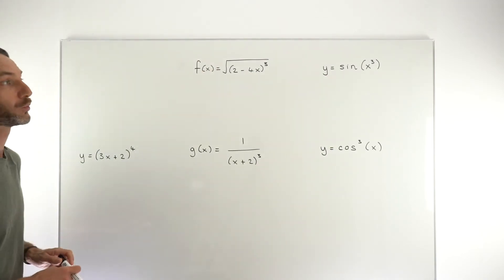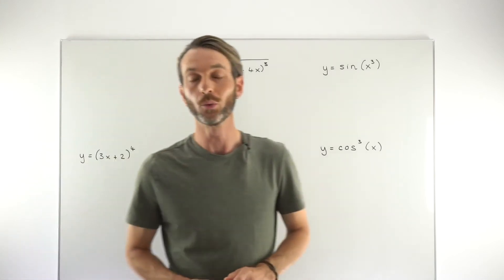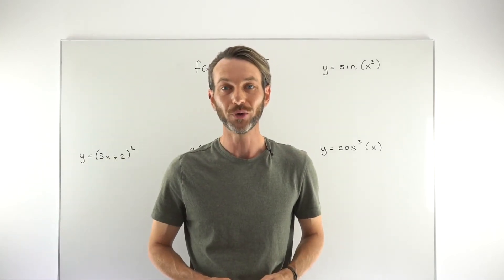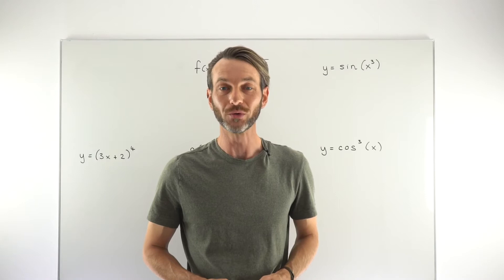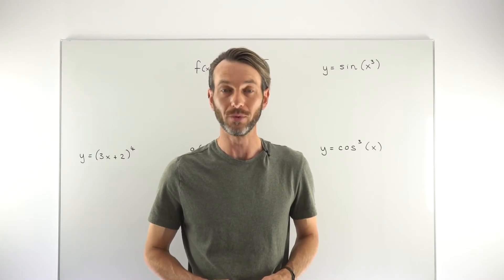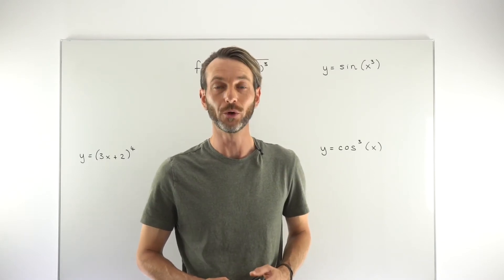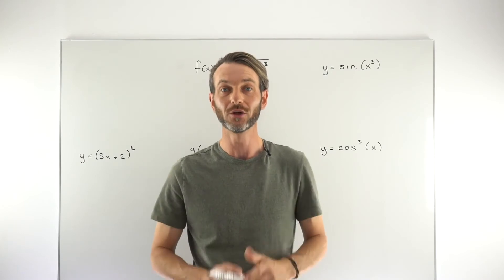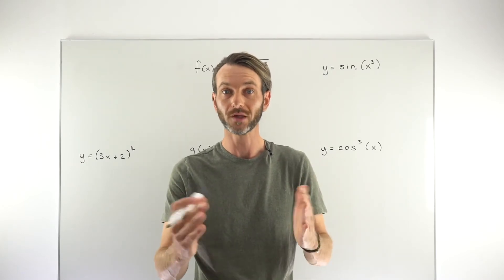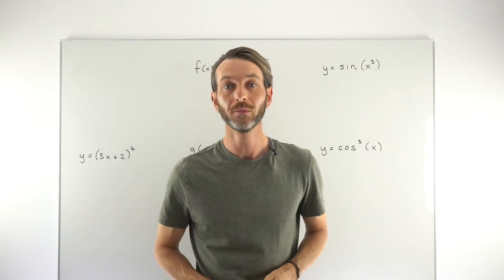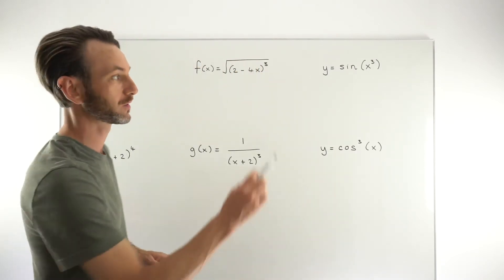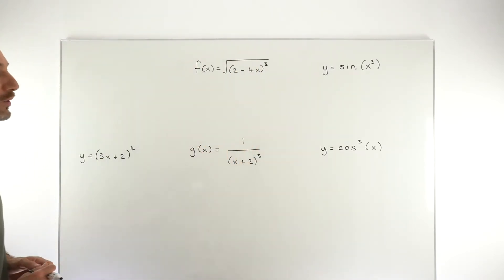Let's start with a little reminder about what the chain rule is and how it works. The chain rule is a rule we use to differentiate composite functions. A composite function is when you've basically got a function inside another function — usually two functions, it can be more, but almost always we're going to be working with two functions, and certainly in this video.